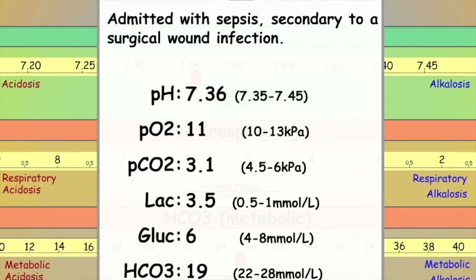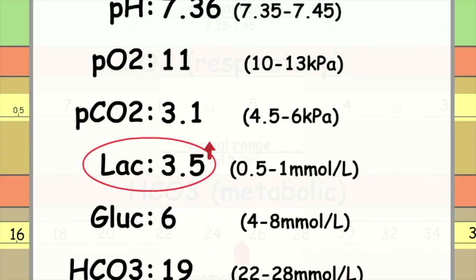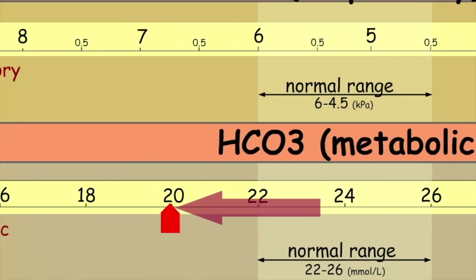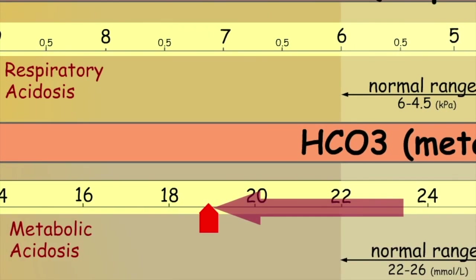Our second ABG has been taken from a patient suffering with sepsis. As we know, one of the complications of sepsis is a build-up of lactic acid in the blood. Therefore, we could reasonably expect this patient to be suffering from a metabolic lactic acidosis. We can see from this ABG that the lactate is, in fact, elevated. Not only that, but we have a reduced bicarb level, which we would think consistent with a metabolic acidosis.